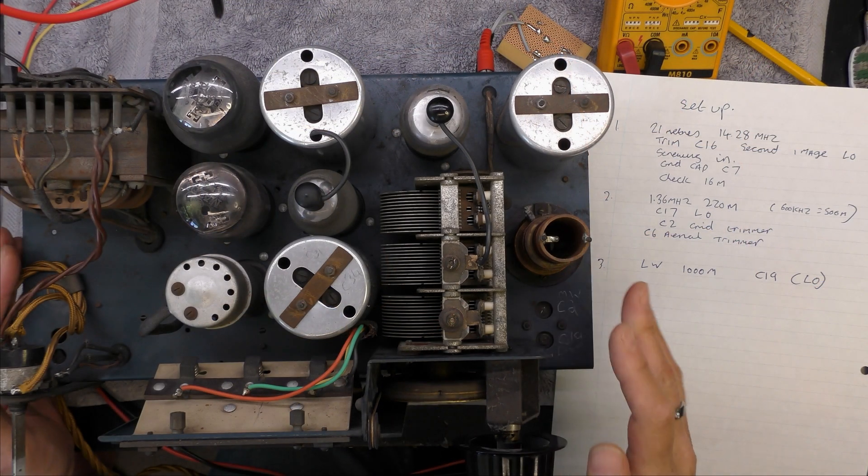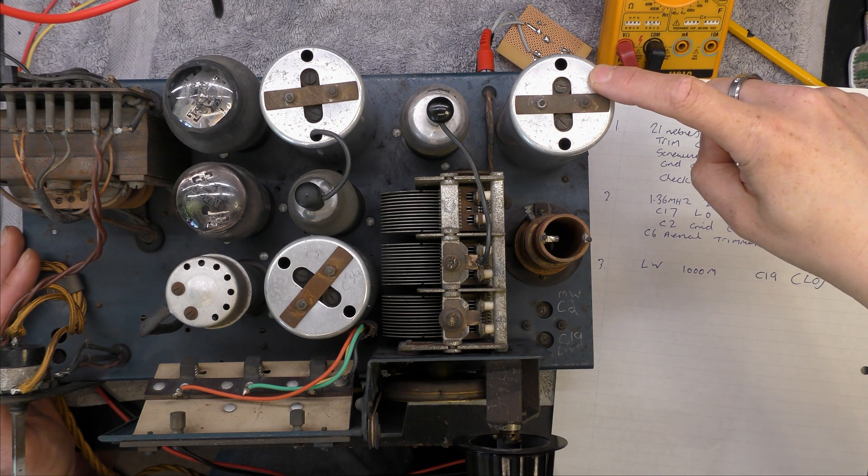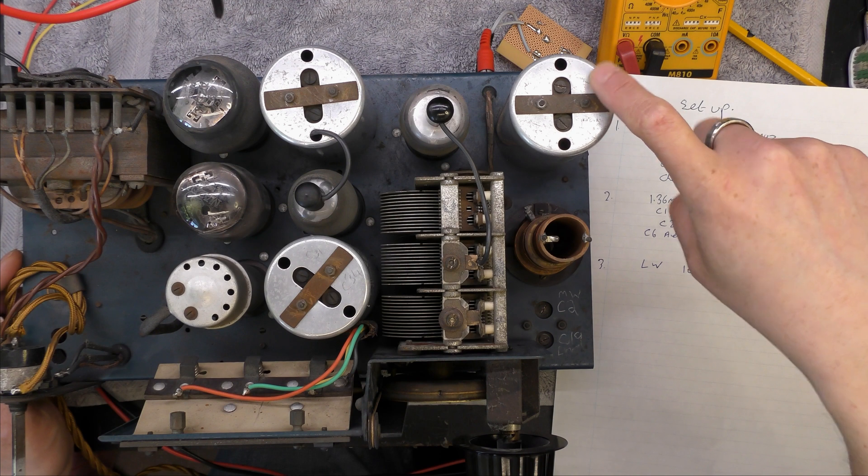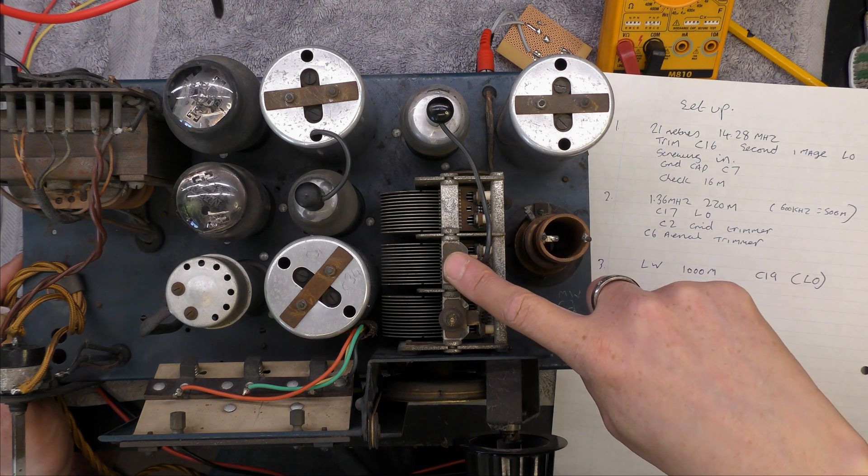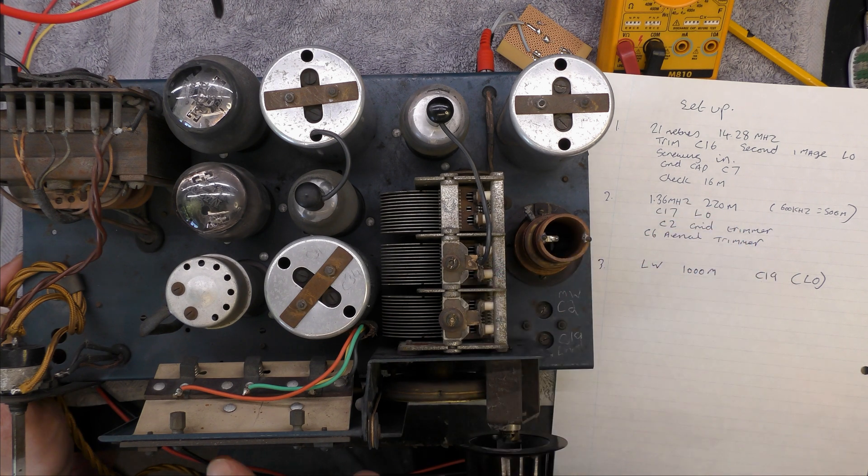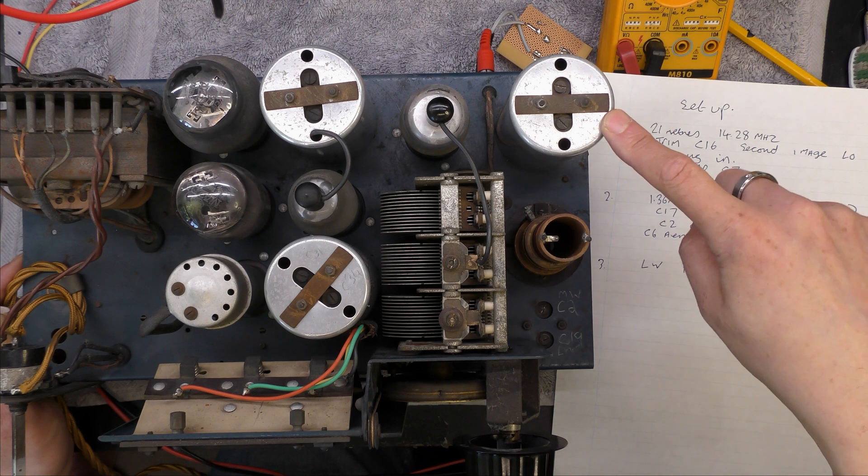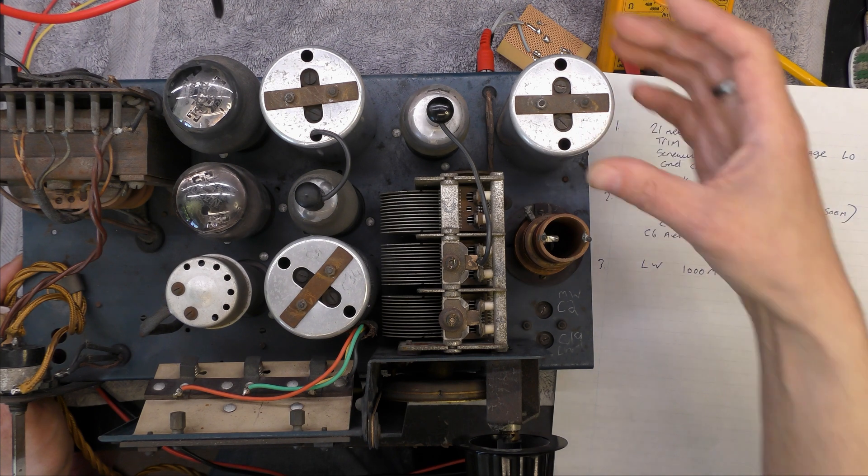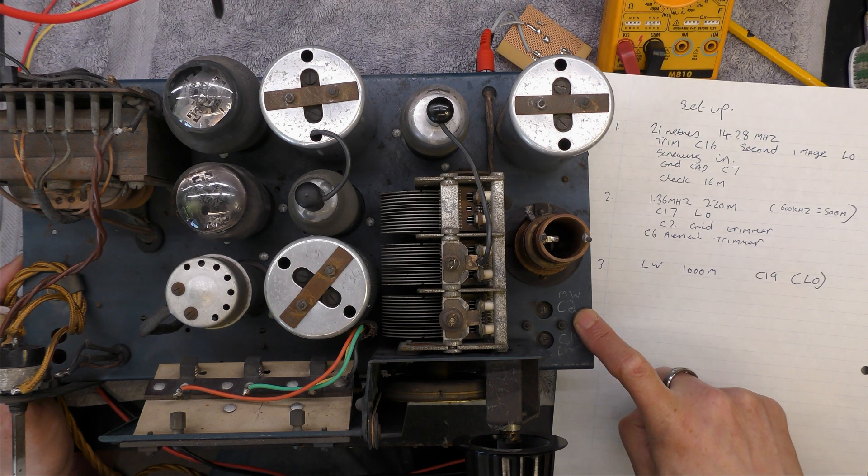The setup procedure is: tune 21 meters on short wave, tweak the local oscillator which is C16, and it's for the second peak when screwing down. I've made note of that and I hope that is the right one and not the image. Then you adjust this capacitor here which is on the grid, then check 16 meters. I found I couldn't receive 16 meters still, so that's a bit interesting. Medium wave, which is the one I'm having problems with, that's 220 meters, so you adjust the local oscillator which is here, then you trim this trimmer here which is against the medium wave axillary coil, and then you tune this one on the capacitor as well.